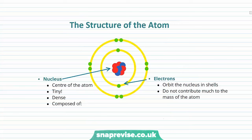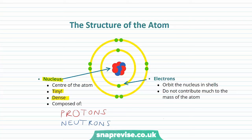So here we have that model. We're going to look at the structure of the atom. At the centre of the atom we have our nucleus. This is tiny and dense — it's really dense because it contains almost all of the mass of our atom. Our nucleus is composed of two things: protons and neutrons, which are collectively known as nucleons, as they are found in the nucleus. Orbiting our central nucleus we have electrons, which orbit the nucleus in shells. They're really tiny and don't contribute much to the mass of our atom.